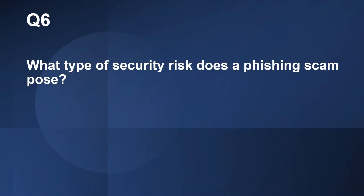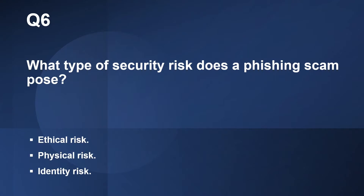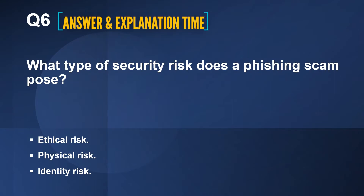Question number six: What type of security risk does a phishing scam pose? The options are: ethical risk, physical risk, or identity risk. The correct answer is identity risk. A phishing scam is an example of an identity attack.